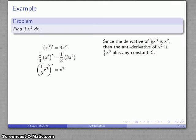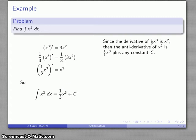To indicate all possible antiderivatives, I write (1/3)x³ plus any constant C. The final answer: the antiderivative of x² is (1/3)x³ + C, where C is determined or not depending on the context of the problem.